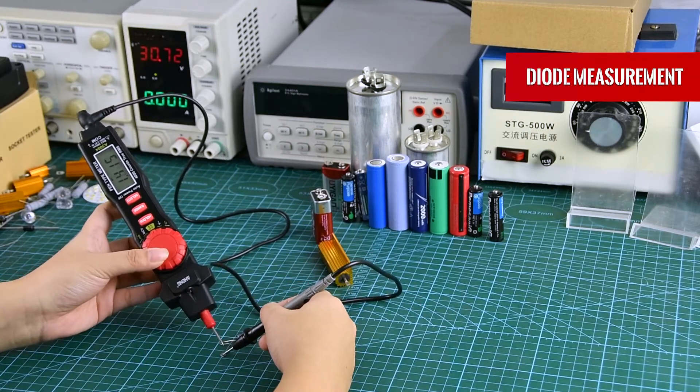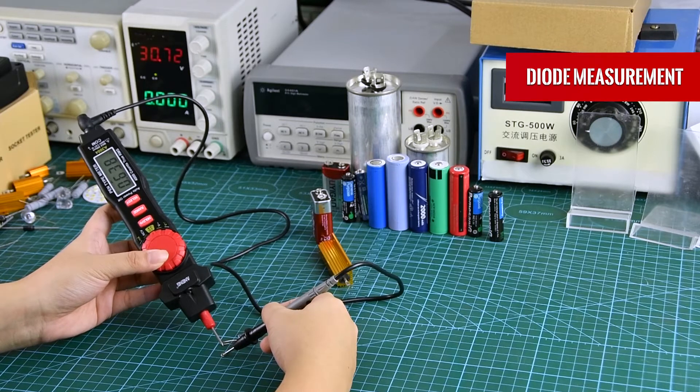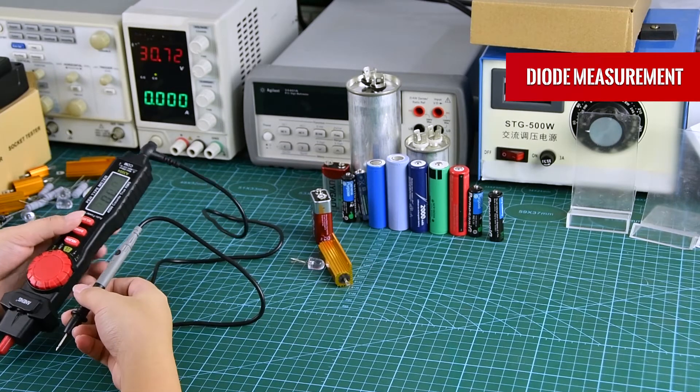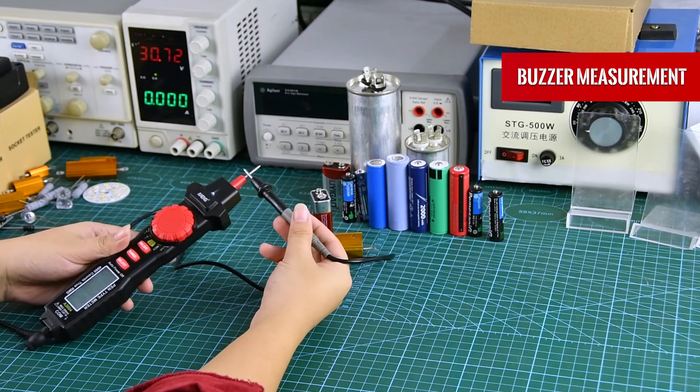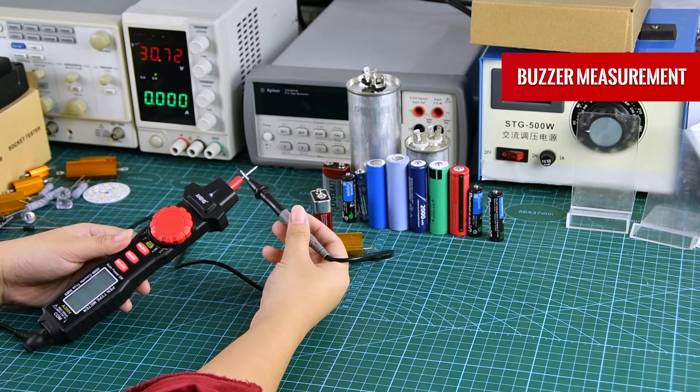Diode measurement: place the stylus on both sides to measure. When the buzzer is detected, a beep is emitted.